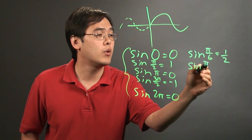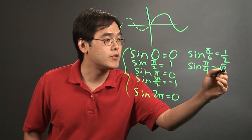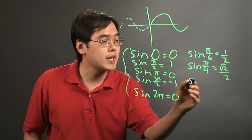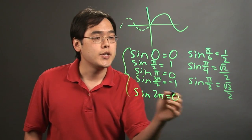Sine of π/4, which is 45 degrees, is √2/2. And sine of π/3, which is 60 degrees, is √3/2.